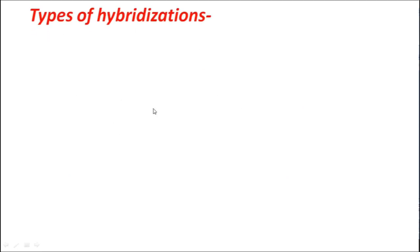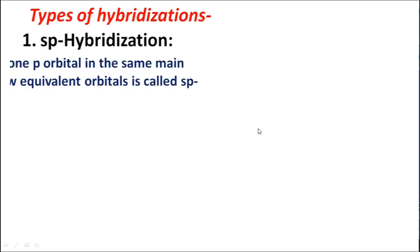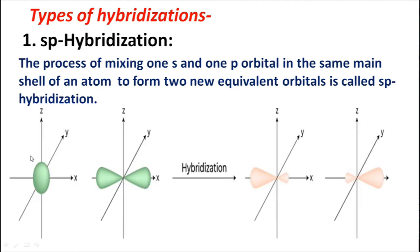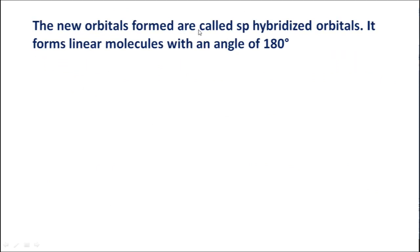The first type is SP hybridization. The process of mixing one S and one P orbital in the same main shell of an atom to form two new equivalent orbitals is called SP hybridization. One S and one P atomic orbital undergo hybridization to give two SP hybrid orbitals. It forms linear molecules with a bond angle of 180 degrees.